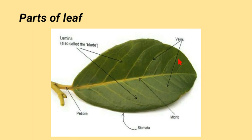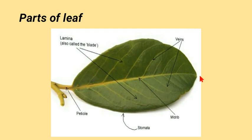This green portion of the leaf is called the leaf plate or lamina. This is the margin of the leaf plate. This is the leaf base. The stalk of the leaf is called the petiole, and this is the apex of the leaf — you can also call it the leaf tip or leaf apex.